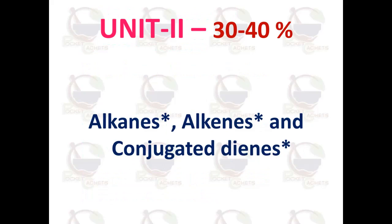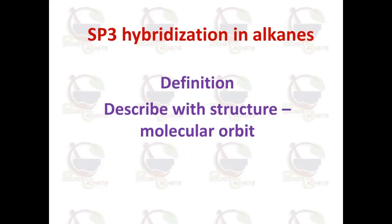Unit 2 carries almost 30 to 40 percent weightage in the exam. This unit discusses alkanes, alkenes, and conjugated dienes related topics. An important topic is SP3 hybridization in alkanes. Questions can be asked on SP3 hybridization or SP2 hybridization.